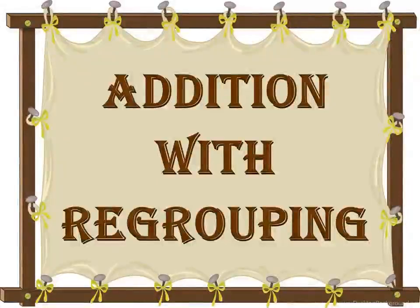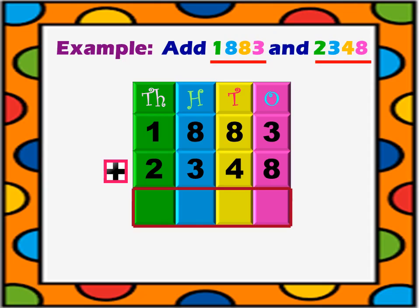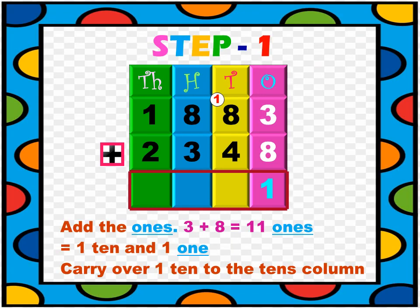Next, let us move on to addition of 4-digit numbers with regrouping. If the sum of the digits in any column is more than 9, then we must regroup. Add 1883 and 2348. Step 1: Add the ones. 3 ones plus 8 ones equals 11 ones, that is 1 ten and 1 one. We carry over 1 ten to the tens column and 1 stays in the ones place.